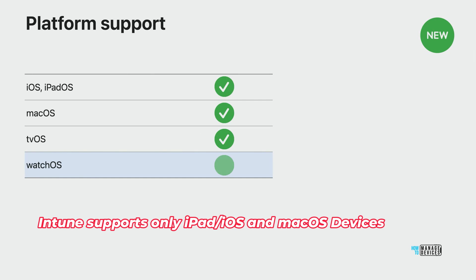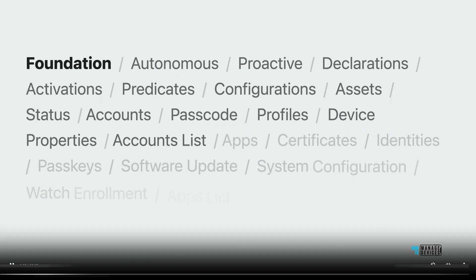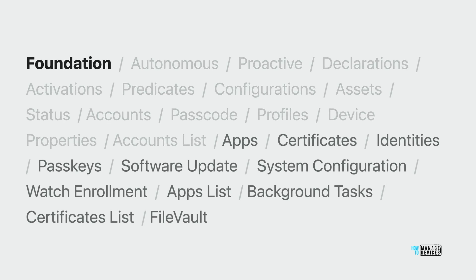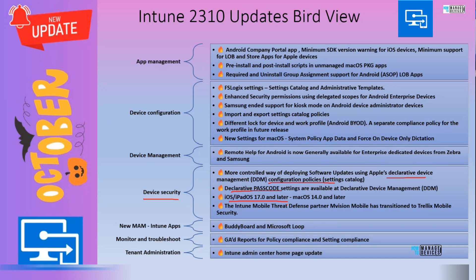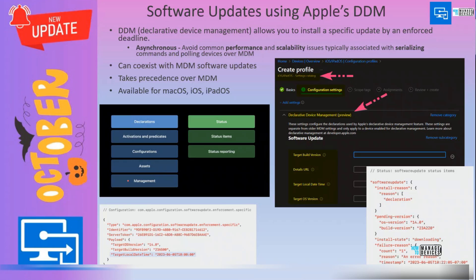Declarative passcode settings are available for Apple devices. The criteria for that is iOS or iPadOS version 17 and later, and for macOS it is 14 and later. Those are the prerequisites for declarative passcode settings and declarative software update settings for Apple devices. This is the DDM thing I talked about.